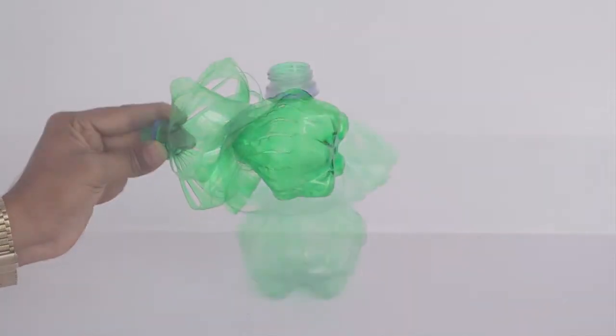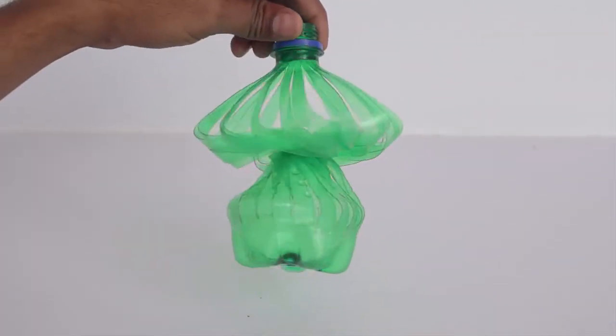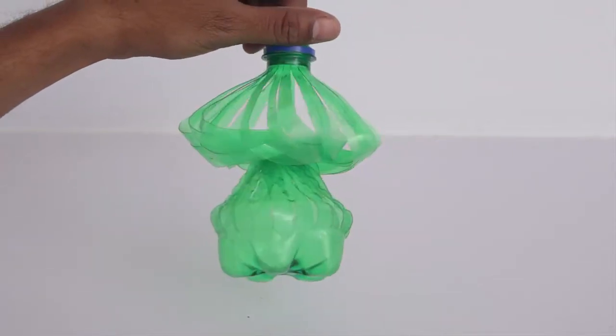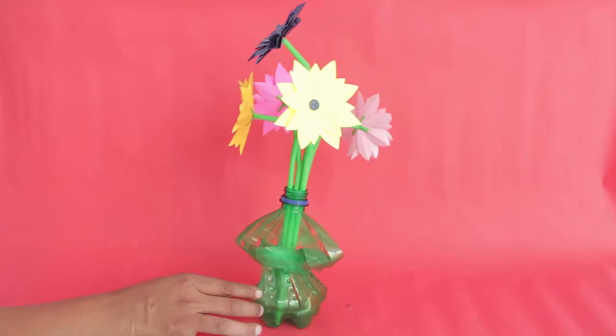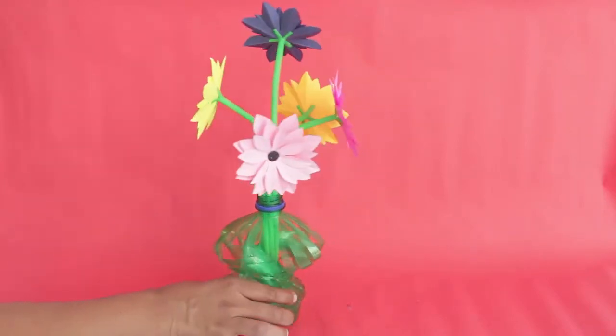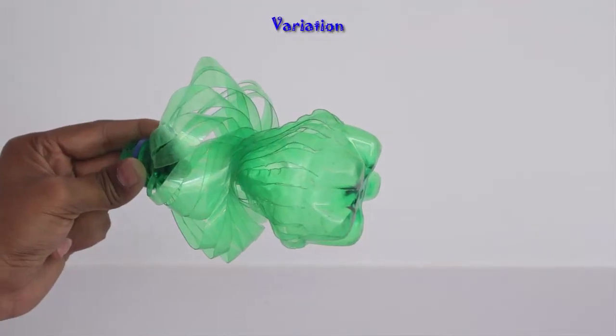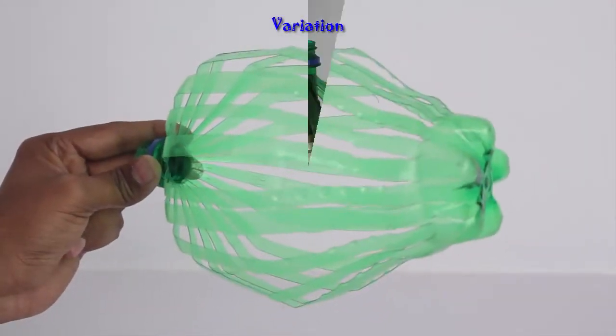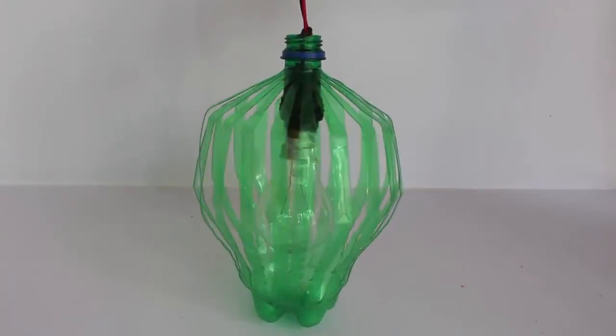See the twisting action once again. The twisted bottle will make a very beautiful flower vase. Now you can untwist the bottle, and this shape will make a very nice lampshade.